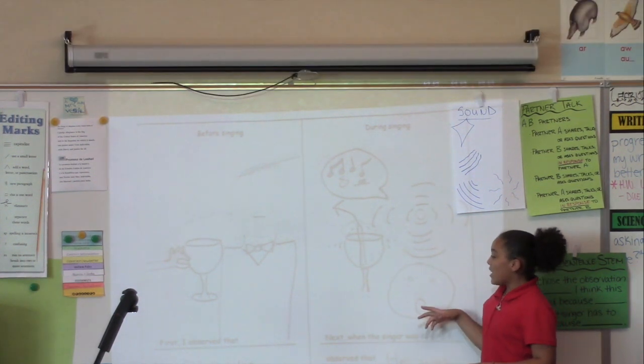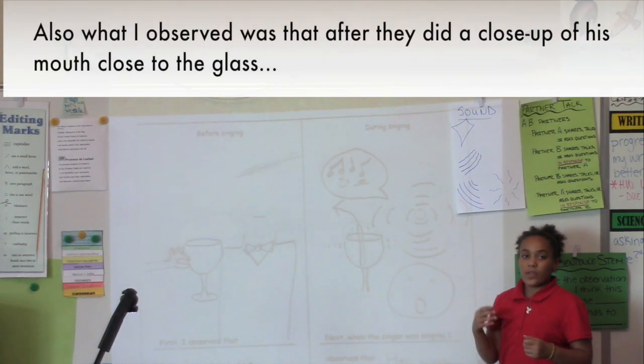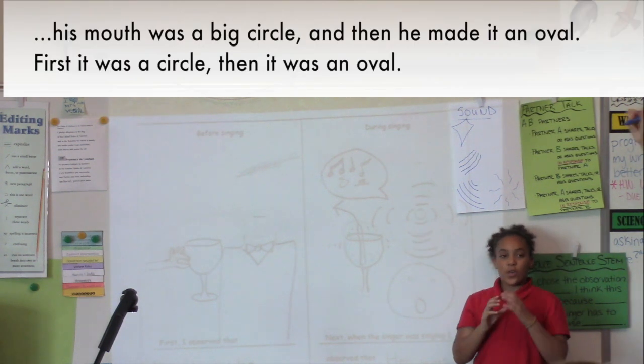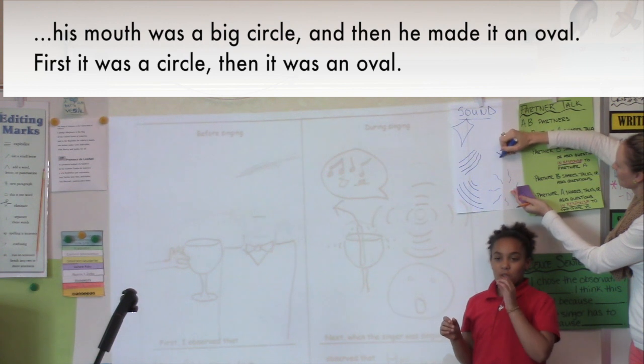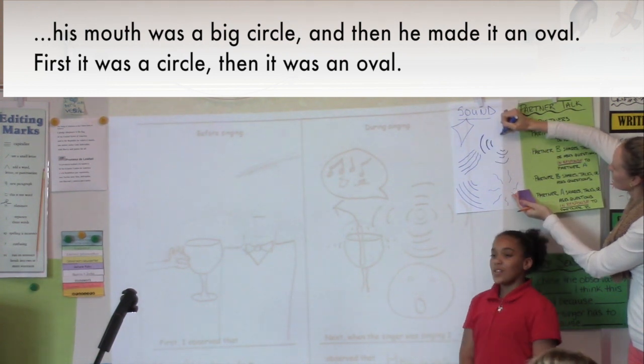Also, what I observed was that at the beginning when they did a close-up of his mouth close to the glass, first his mouth was a big circle, and then he made it an oval. First it was a circle, then it was an oval.